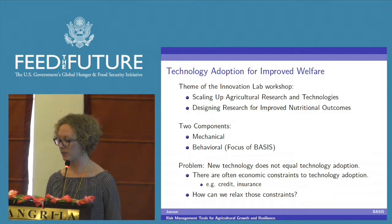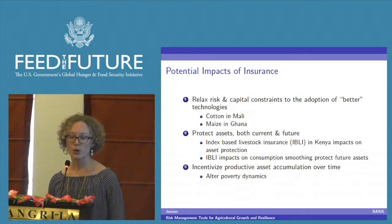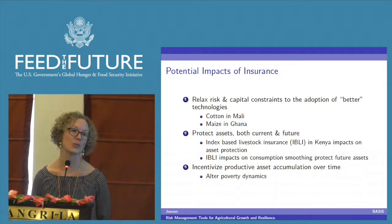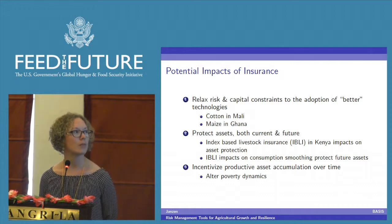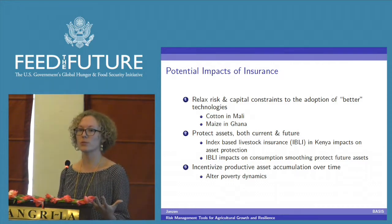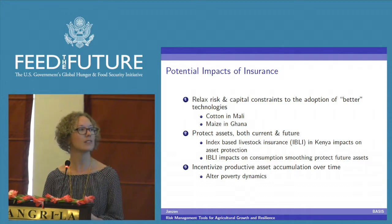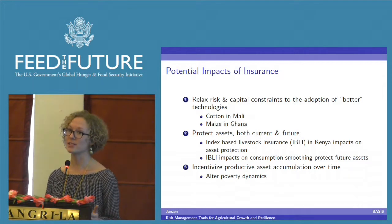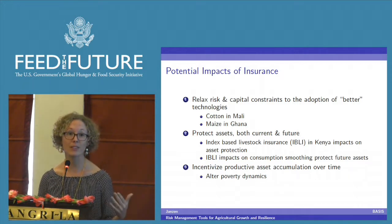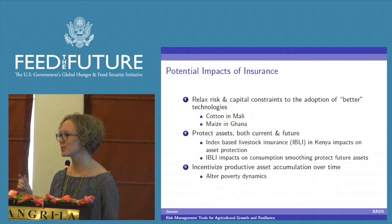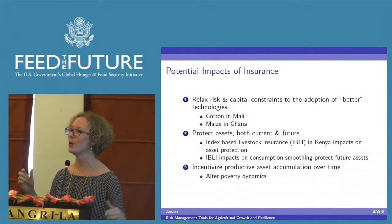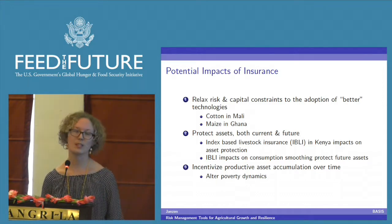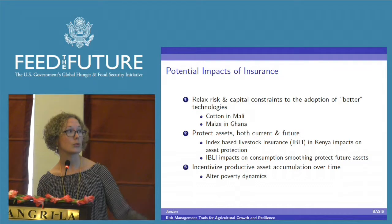Today I want to talk about insurance. Some potential impacts of insurance are threefold. First, when you give households access to insurance, they're actually more likely to adopt riskier technologies. The technologies are often better, higher returns, more profitable, but slightly riskier. If you give people access to insurance, they may be more likely to adopt the technology.